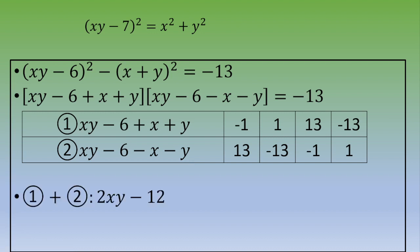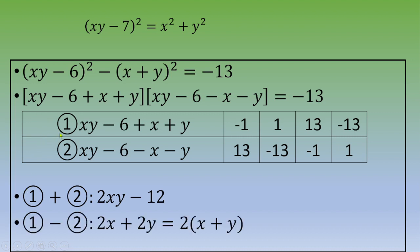Computing ① plus ②: the xy terms give 2xy, the constant terms give negative 6 minus 6 equals negative 12, and the x and y terms cancel. So ① plus ② equals 2xy minus 12. Computing ① minus ②: the xy terms cancel, the constants give negative 6 plus 6 equals 0, and the x and y terms give x plus x equals 2x and y plus y equals 2y, which factors as 2 times (x plus y).